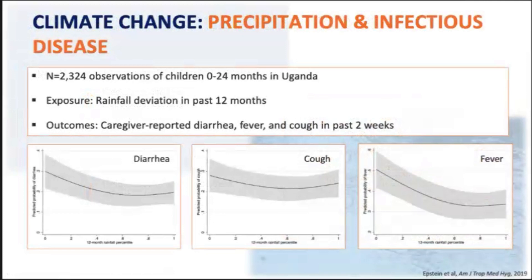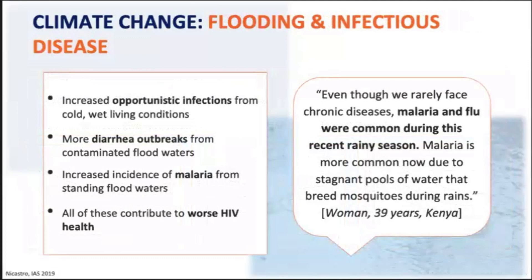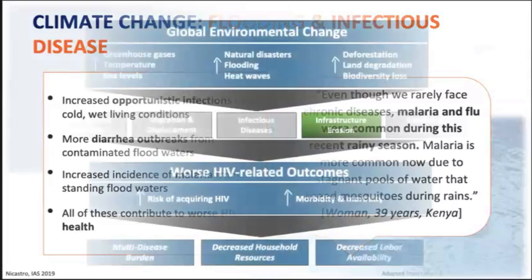Using Uganda National Panel survey data, our team found that as precipitation increased, self-reported diarrhea, cough, and fever among children decreased — but this leveled off and started increasing again at the highest levels of rainfall. HIV-infected participants in Kenya described what they perceived as increased opportunistic infections from cold and wet living conditions, more diarrhea outbreaks from contaminated floodwaters, and increased incidence of malaria from standing floodwaters — all contributing to worse HIV health.